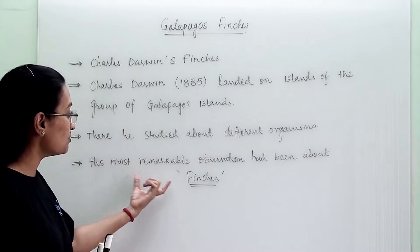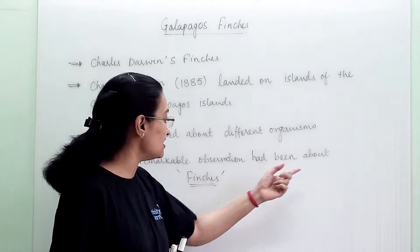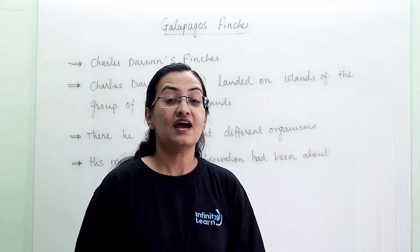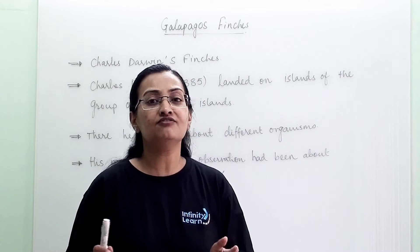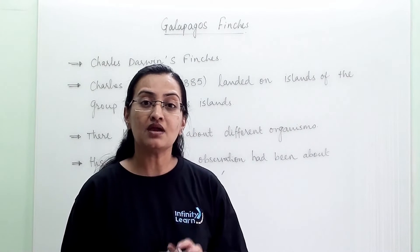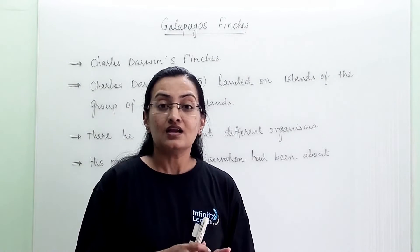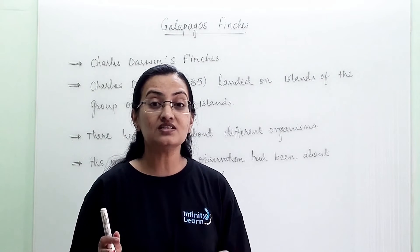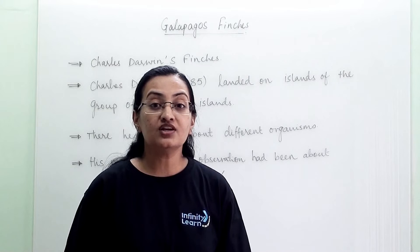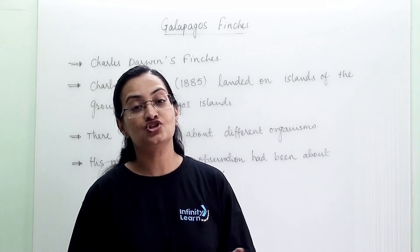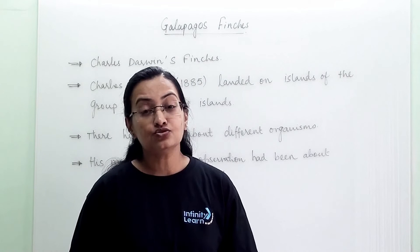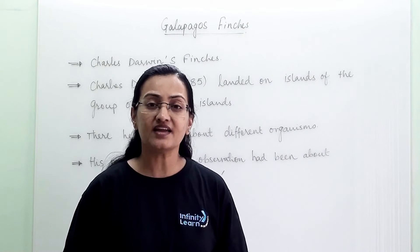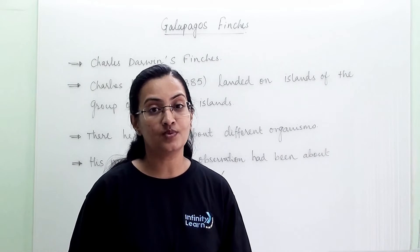His most remarkable observation was about finches. Finches are a type of bird, and he had seen them in 13 different varieties. He made observations about why there are so many varieties of finches and why they have adapted so many changes from the original ones.